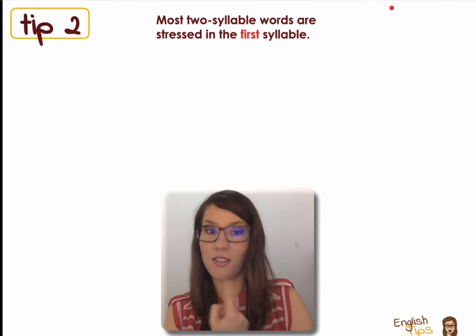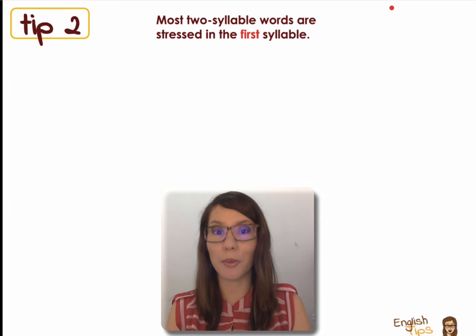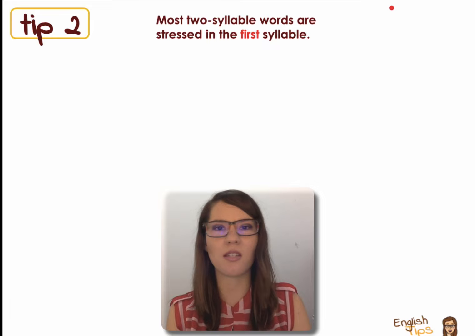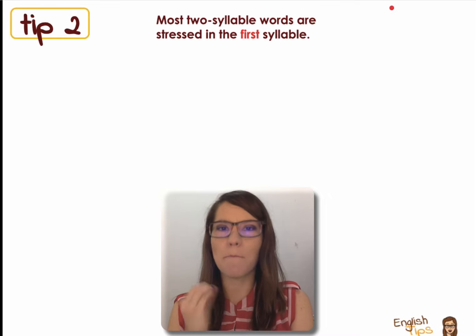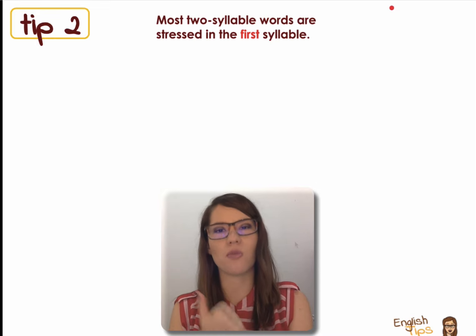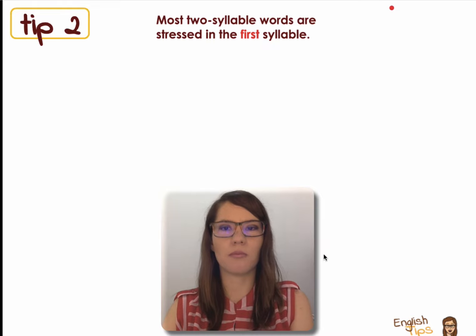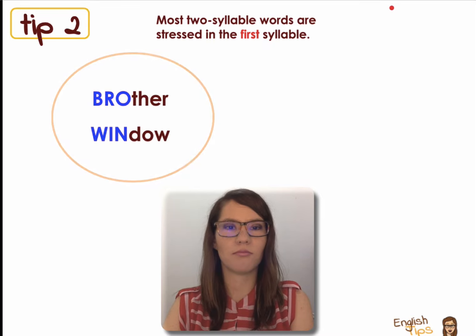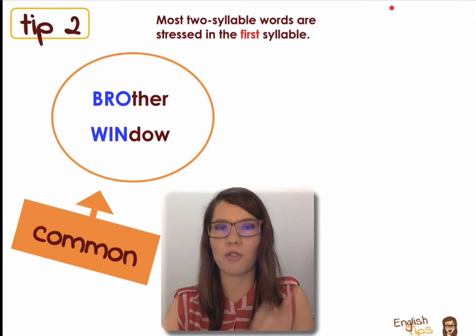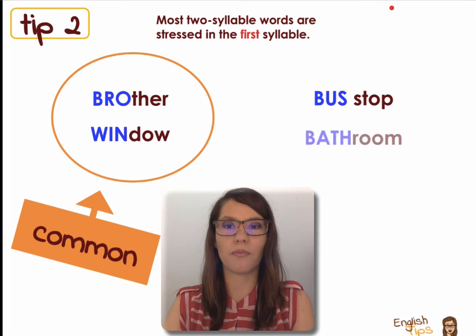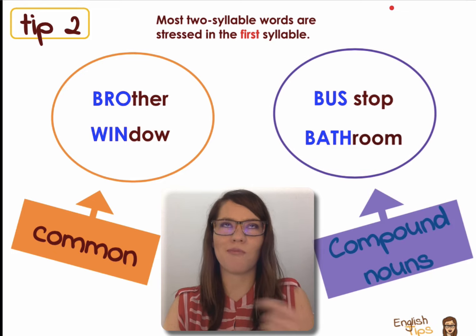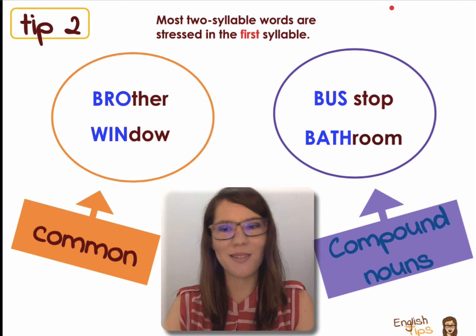Well, that was the first tip, and you had some practice because it was a little bit more difficult. But for tips number two and three, you just need to pay attention to these particular examples. The second tip is that most words that have two syllables in English are stressed on the first one. There are words such as brother and window that are very common, and all of those words coming from a Germanic root follow this rule. There are also compound nouns like bus stop, bathroom, and bedroom — whether spelled separately or not, they are stressed on the first syllable. So you just need to memorize this.